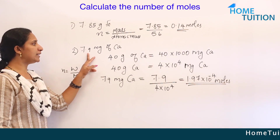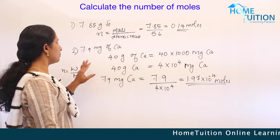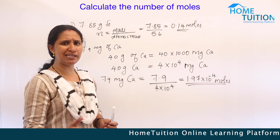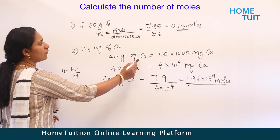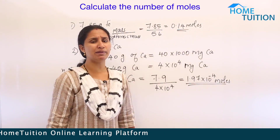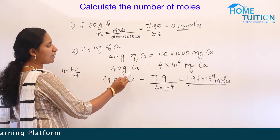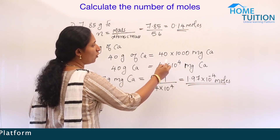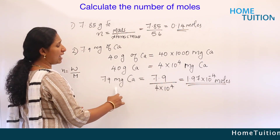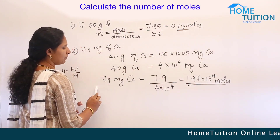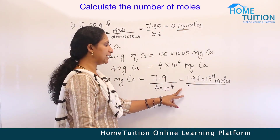Next: 7.9 milligrams of calcium. Note: mg here means milligrams, not magnesium. To convert: 40 grams equals 40 × 1000 = 4 × 10⁴ milligrams. So number of moles equals 7.9 divided by 4 × 10⁴, giving 1.97 × 10⁻⁴ moles.